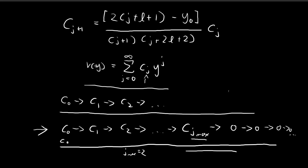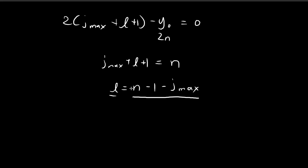When j_max equals zero, we get the largest possible value of l: l = n − 1. For other non-zero values of j_max — like one, two, or three — the l values obtained are all smaller than n − 1. So this imposes a restriction on l: l can go no higher than n − 1.